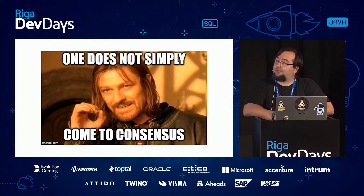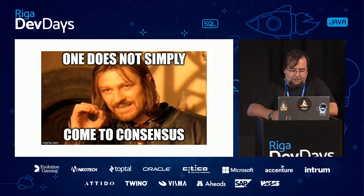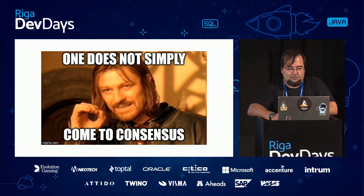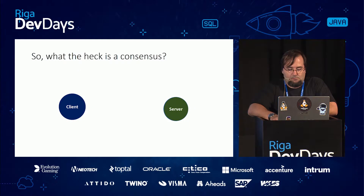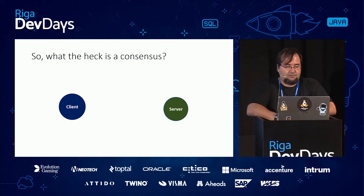So I am going to talk about the Raft consensus protocol. This is something that we use in RavenDB, and this is something that can be beneficial not only in the database space, but in many kinds of scenarios. But before we talk about Raft itself, let's see what the heck consensus is.